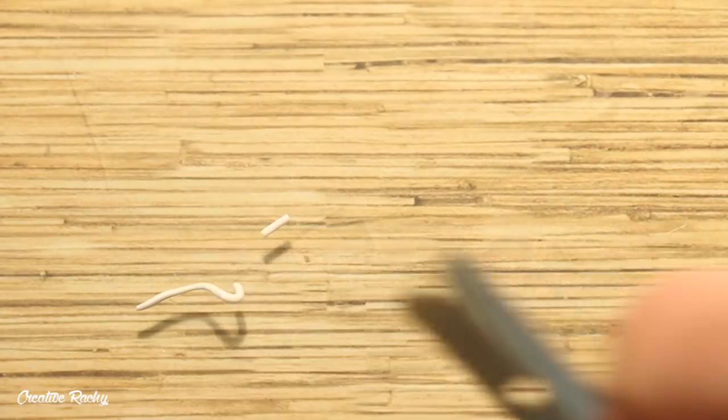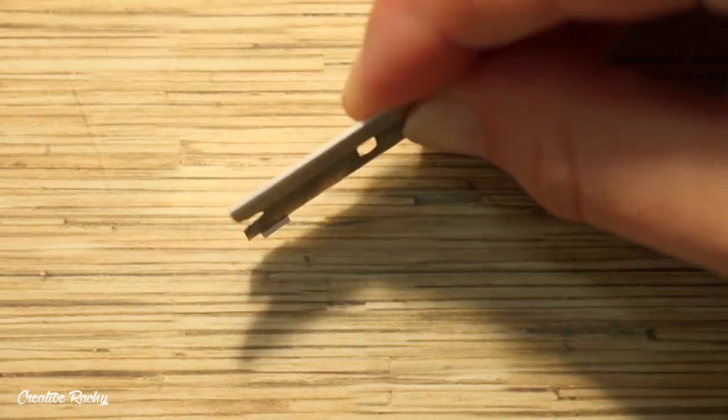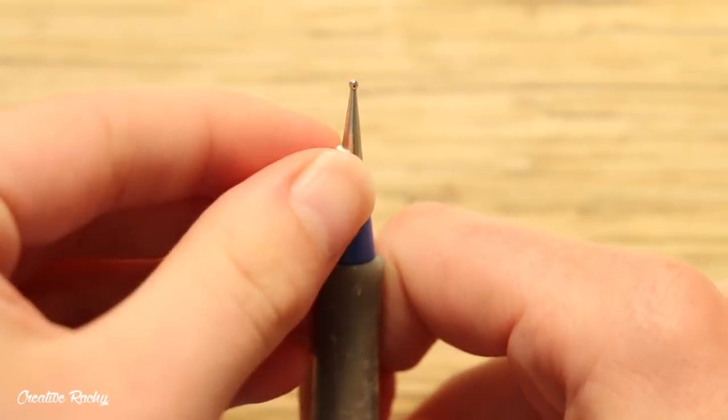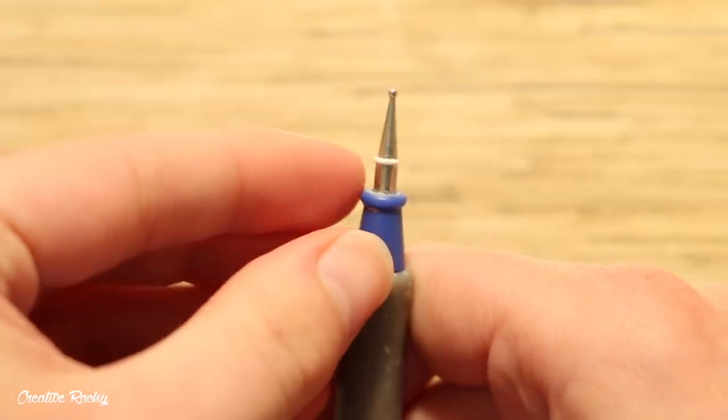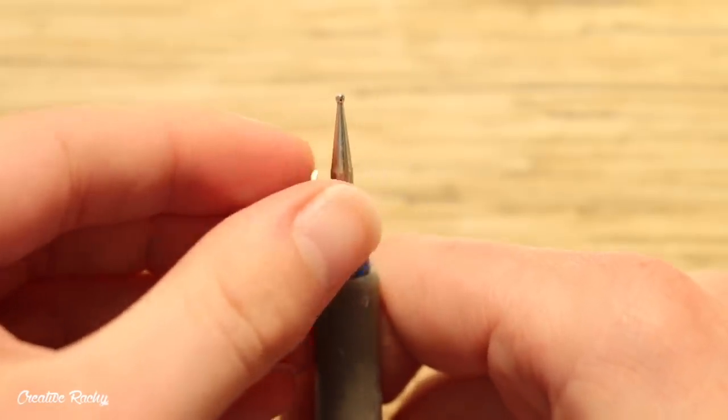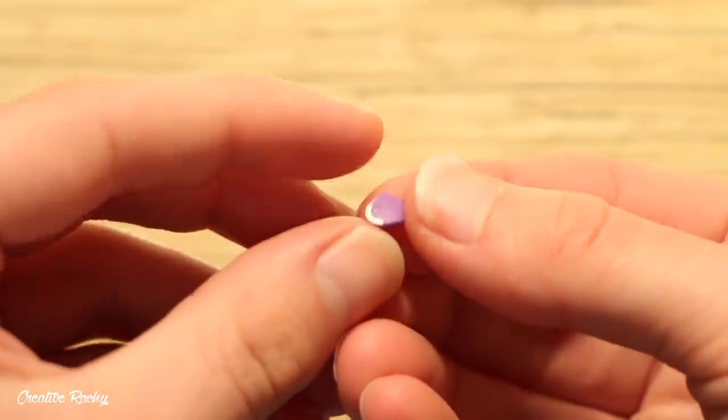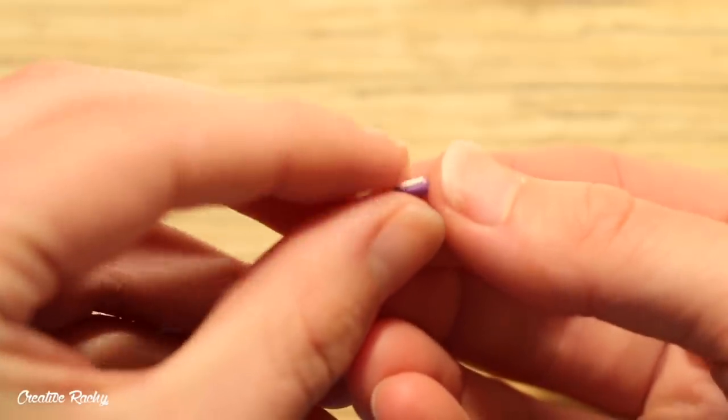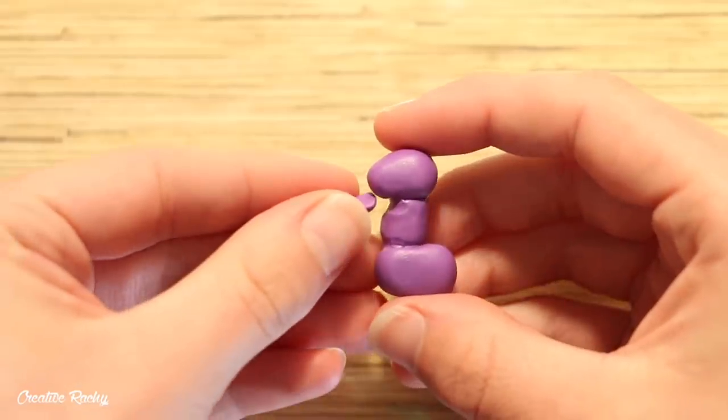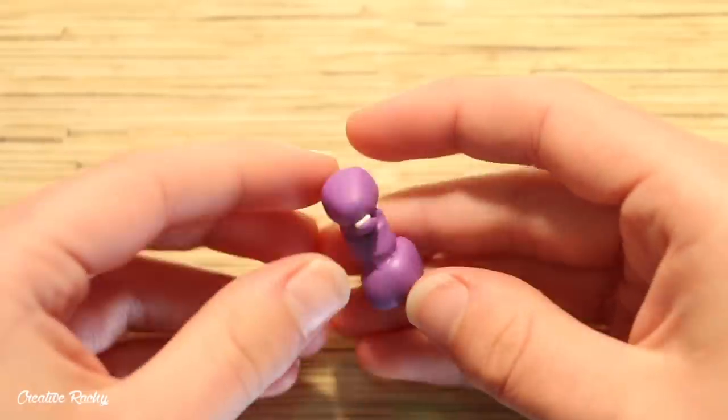Now you can go ahead and make the teeth using a strip of white clay and then add it onto the jaw. Now simply place the jaw into the indent that we previously made.